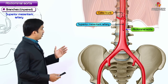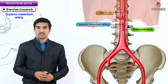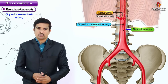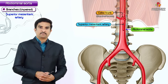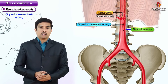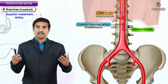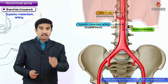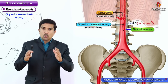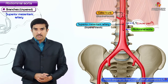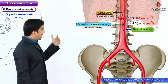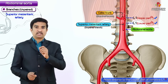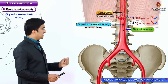The celiac trunk is an anterior branch but is an unpaired branch. The superior mesenteric artery is also an unpaired branch arising from the anterior aspect of the abdominal aorta, arising anterior to the lower part of vertebra L1. So the upper part of L1 is related to the celiac trunk, and the lower part of L1 is related to the superior mesenteric artery.